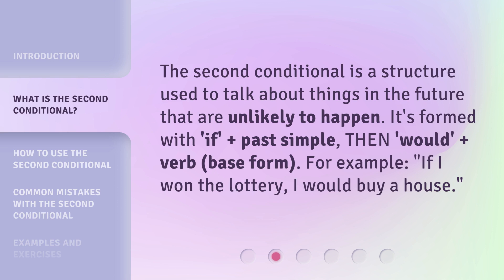The second conditional is a structure used to talk about things in the future that are unlikely to happen. It's formed with: 'if' plus past simple, then 'would' plus verb base form. For example: 'If I won the lottery, I would buy a house.'